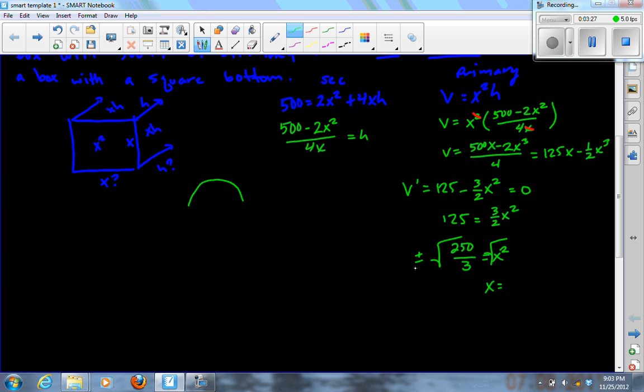We can ignore the negative because you're not going to have a negative length. That's about 9.129. I've done that ahead of time for your convenience. So having one of the measurements, which is actually the other one also. I'm going to have 9.129 by 9.129 by some height.